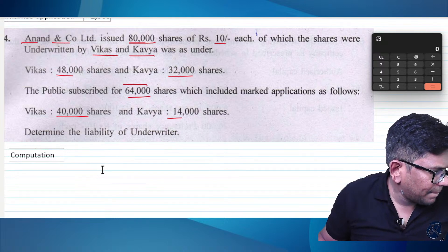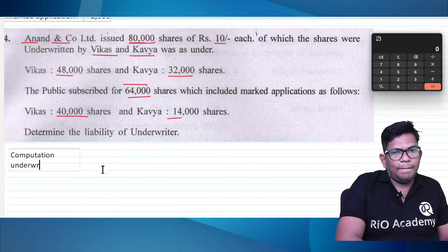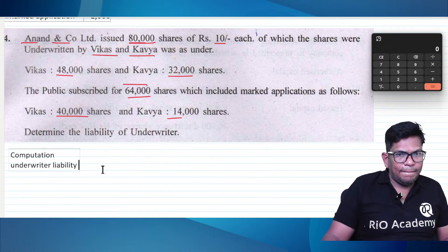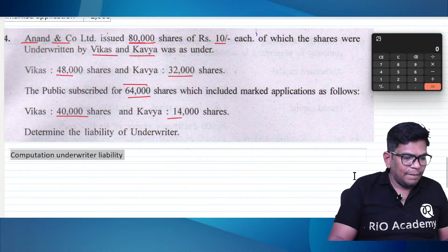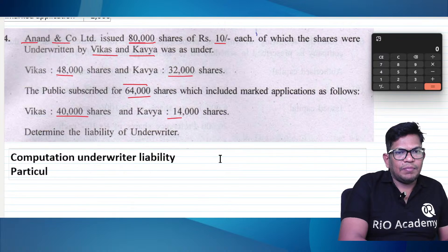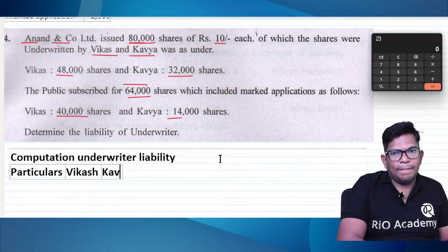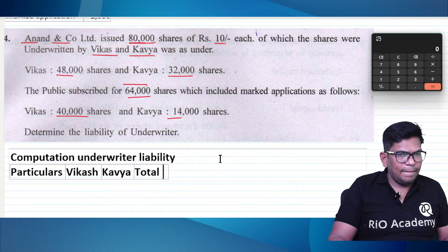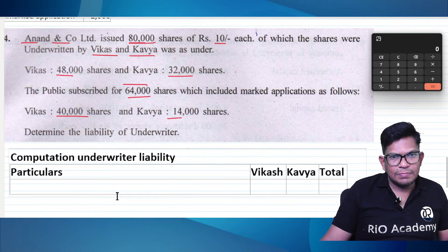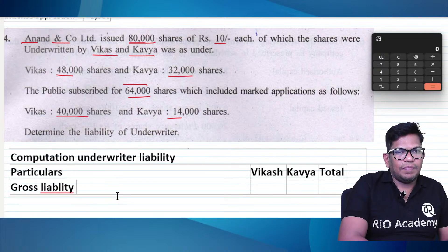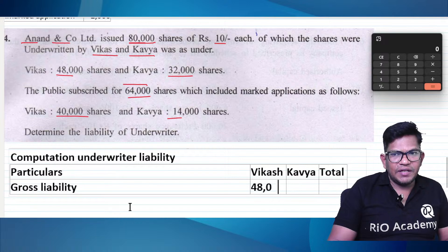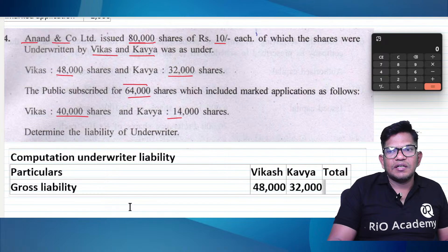Competition of unwritable reliability. Gross liabilities today: that is 48,000 and 32,000 — I say 80,000.